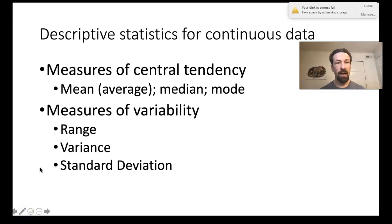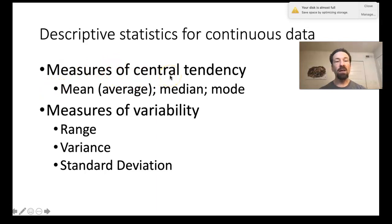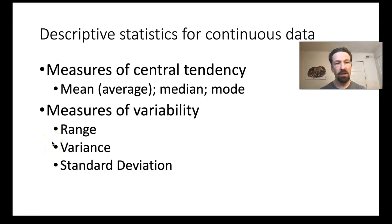We will focus on descriptive statistics for continuous data. For continuous data, we are interested in two things: first, measures of central tendency—measures about the middle or typical value within the population, including the mean, median, and mode—and second, measures of variability, which include the range, the variance, and the standard deviation.